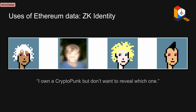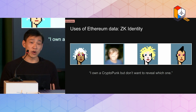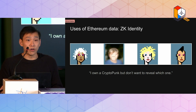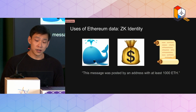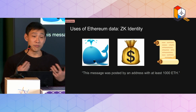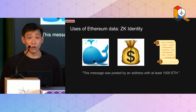Let me give you a few examples of what you can do with this type of data. The first class of applications is for ZK-based identity. For example, you might want to make the claim that you own a CryptoPunk, but you don't maybe want to reveal the address you hold it in and which CryptoPunk you actually own. Another example for a ZK-based social media app, as Barry was mentioning, you might want to lend more credence to some statement you made by saying that you posted it from an address that holds at least 1,000 ETH. It's a pretty strong form of civil protection.